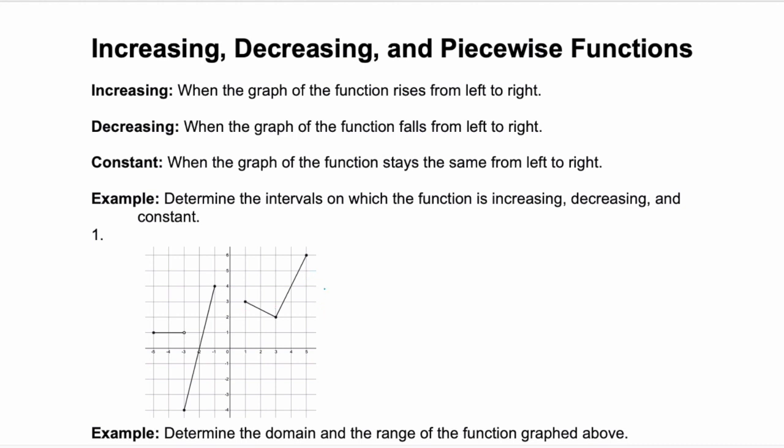This graph is a piecewise function because it's a bunch of different functions pieced together. I like to start at the far left and read the whole graph from left to right. This first chunk goes from negative 5 to negative 3, and it's flat or constant. So that interval, negative 5 to negative 3, goes here in constant.